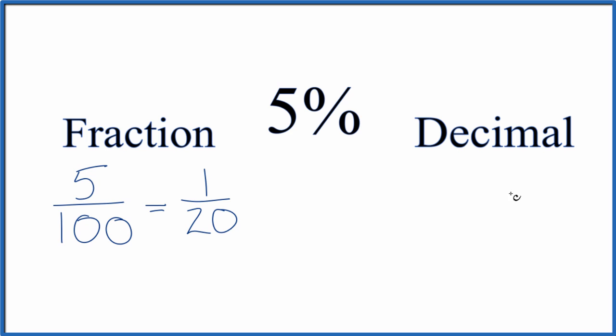So we take our 5, and we're dividing by 100. So 1, 2 decimal places. So we go 1, 2 decimal places, put our decimal point here, and then a 0 would go here.